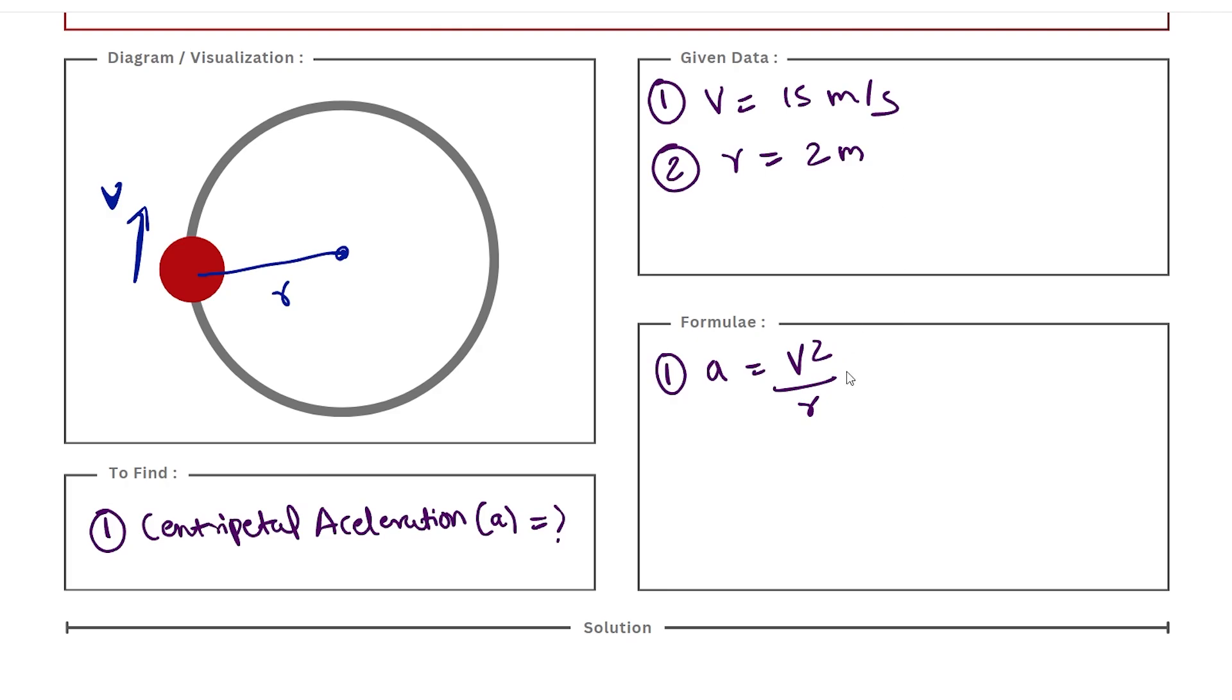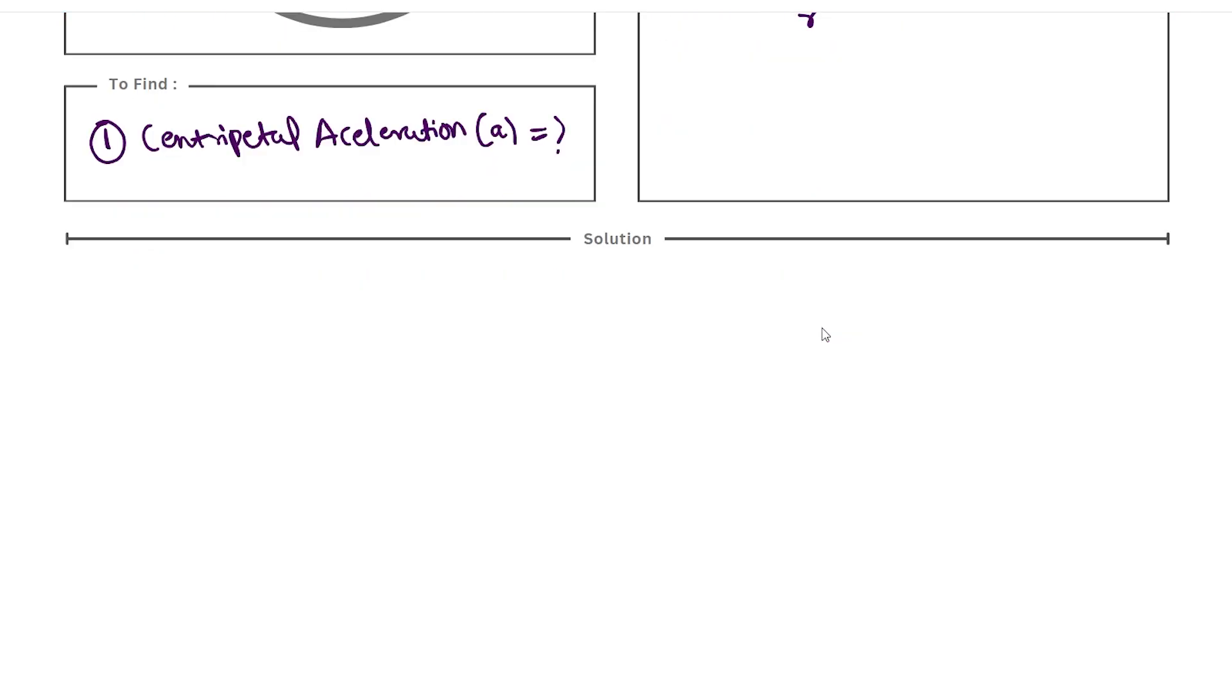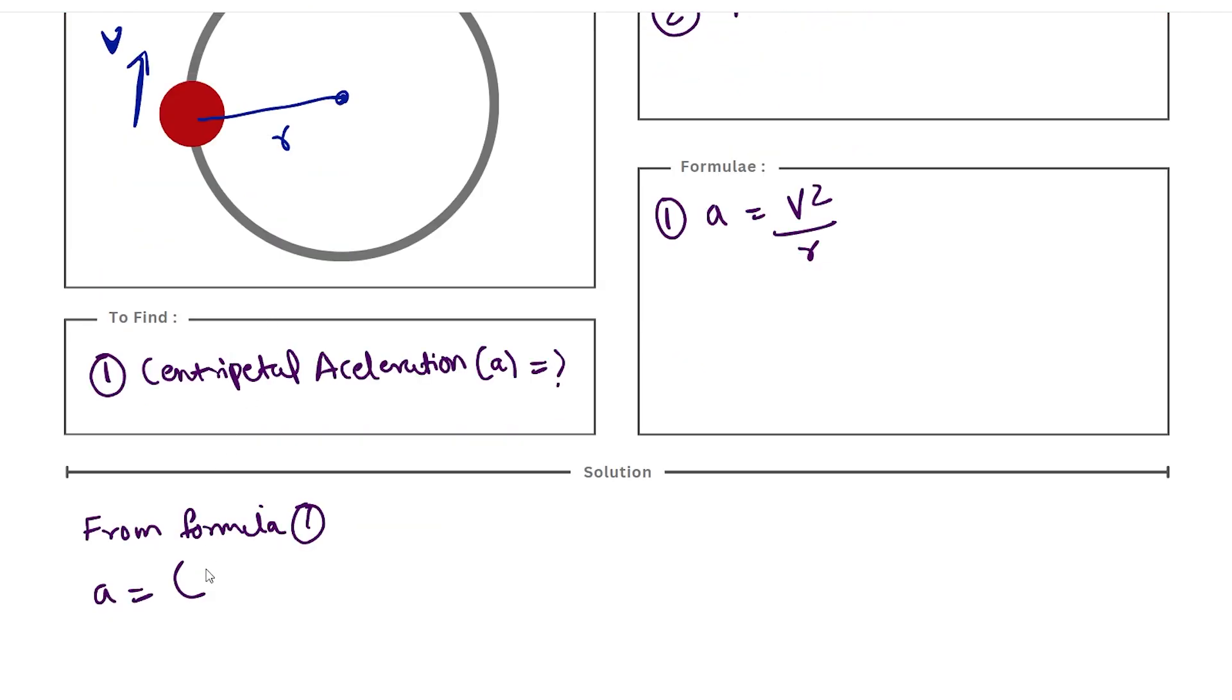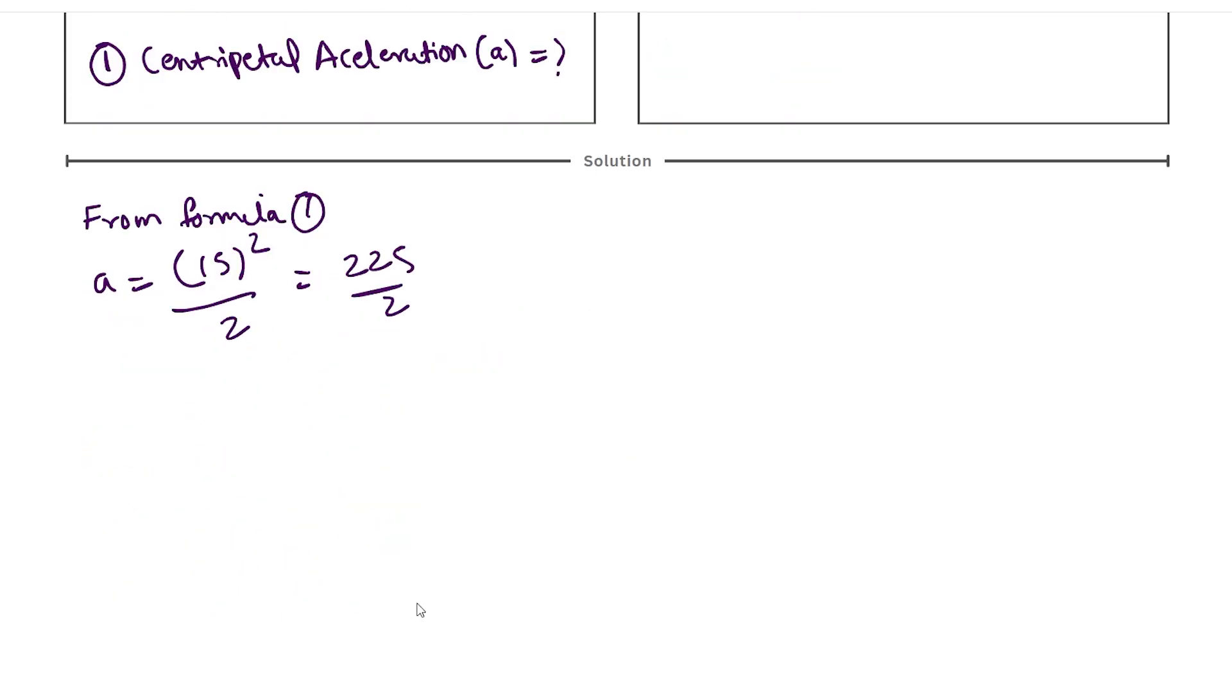Let's quickly substitute these values. So from formula 1, we can say a is equal to 15 squared divided by 2. 15 squared is 225. 225 divided by 2. From this we can say that a is equal to 112.5 meters per second squared.